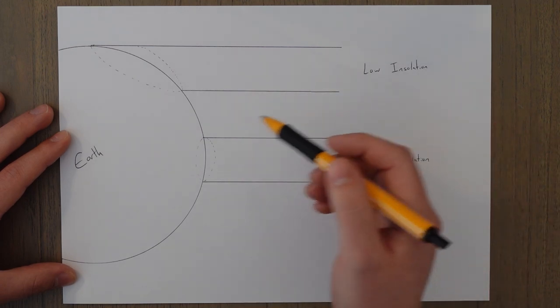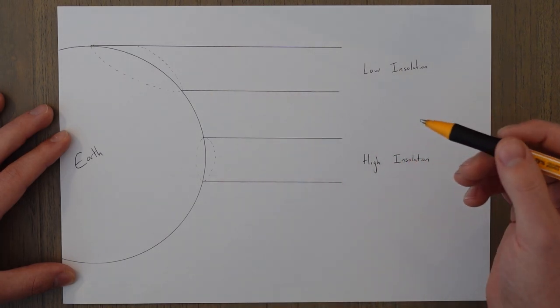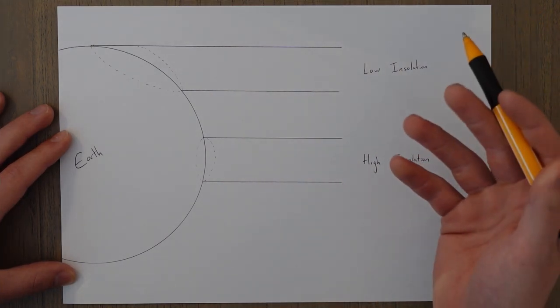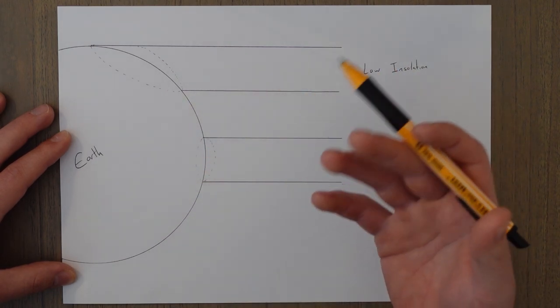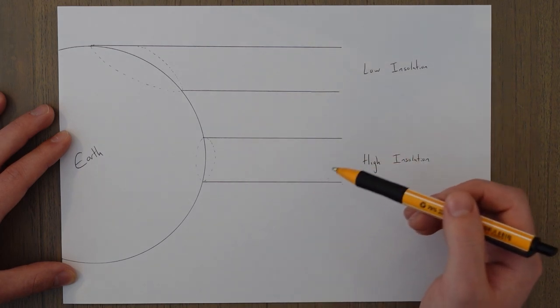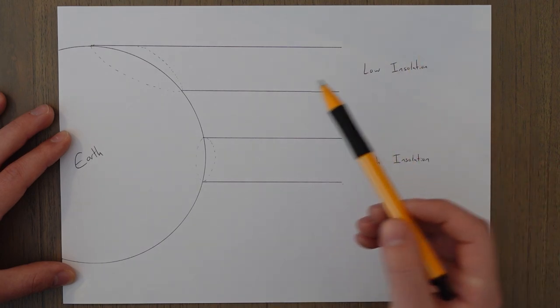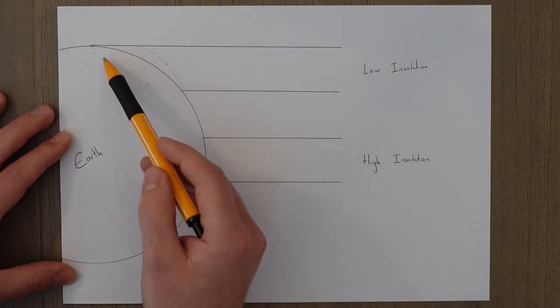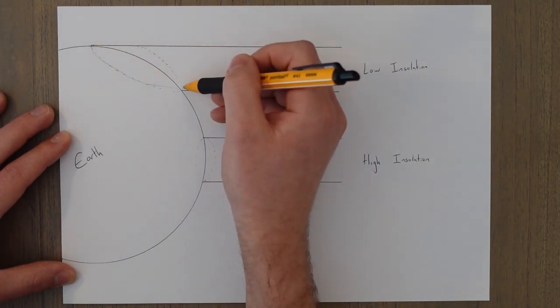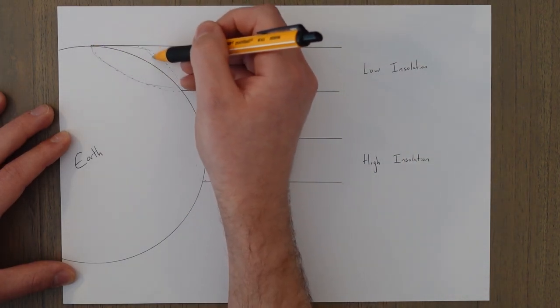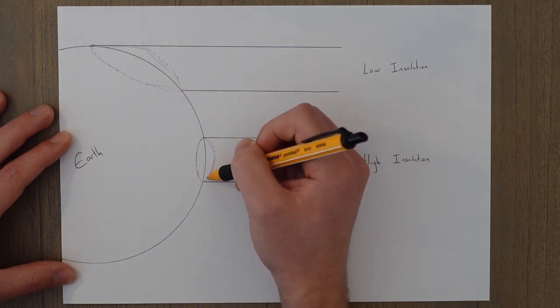The amount that the sun heats up the surface is dependent on a couple of factors. The first of which is called insolation. This is a term used to describe how much energy is absorbed by the earth's surface per unit area. In the drawing here you can see that the same column of sun rays has to spread out over a larger area at the higher latitudes because it's got to go a bit further.